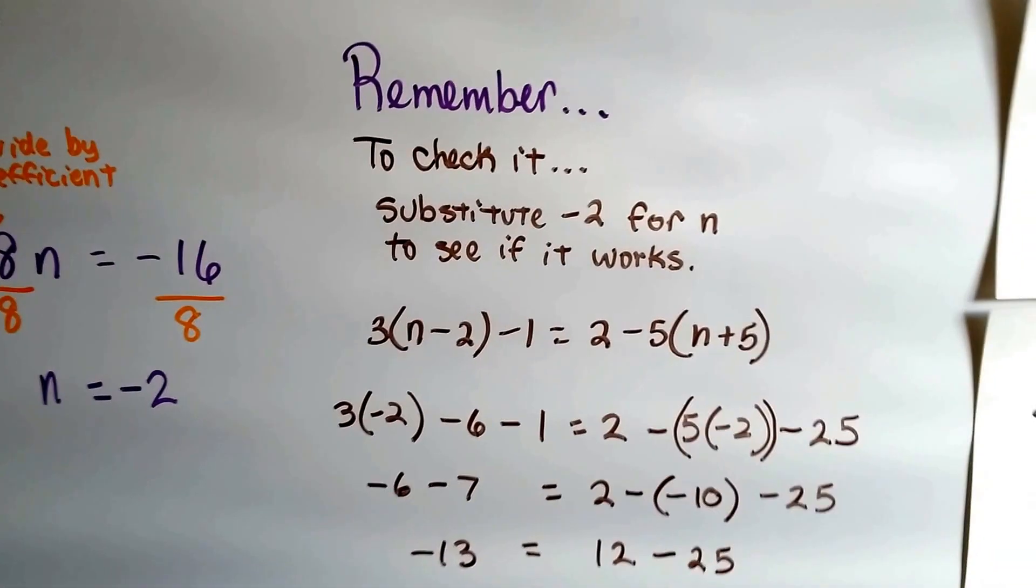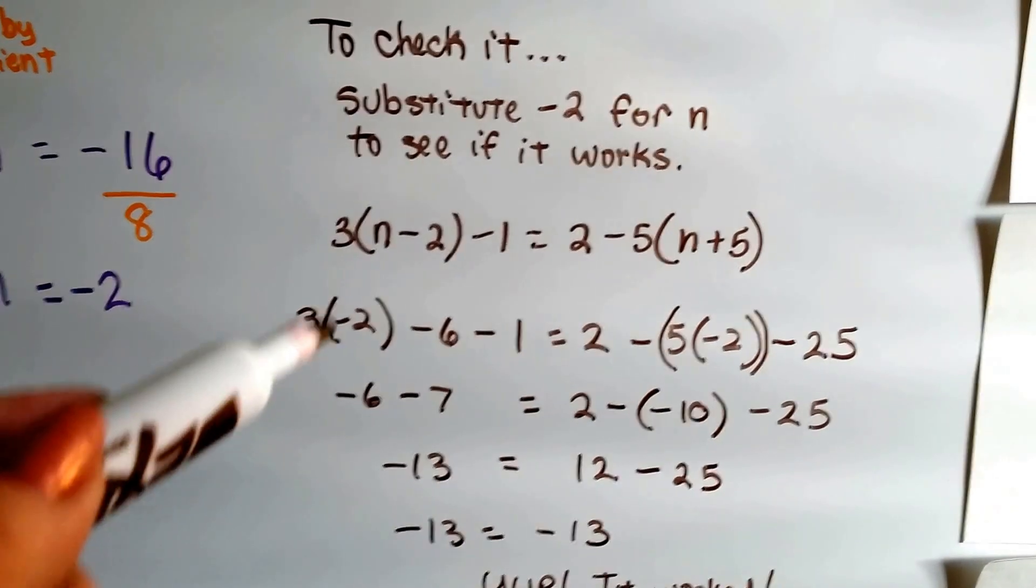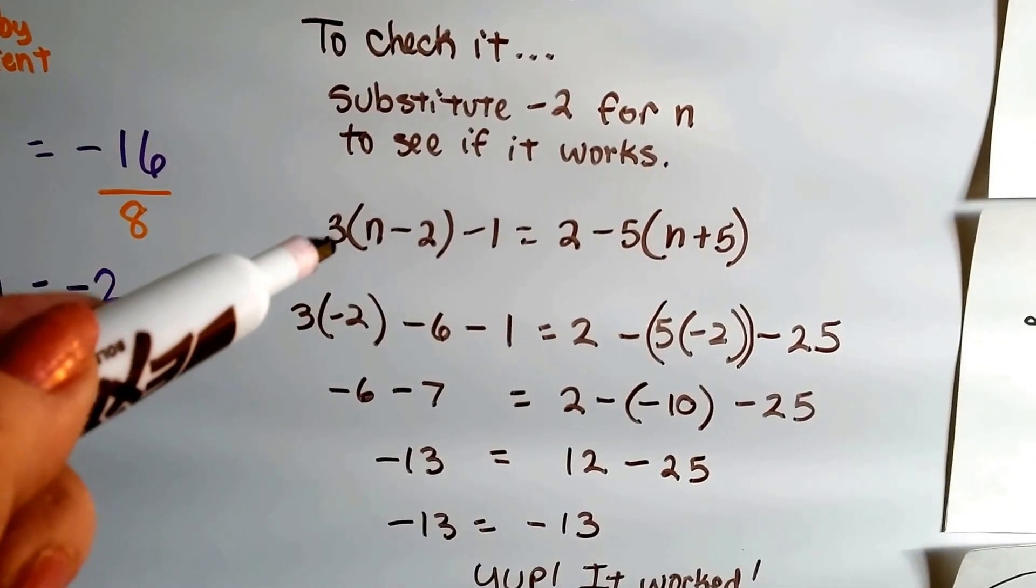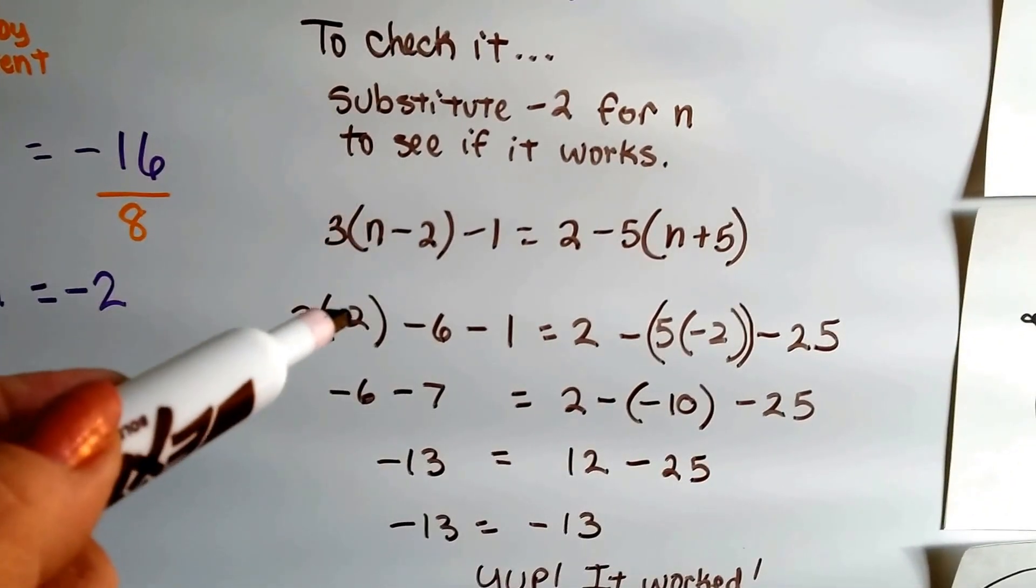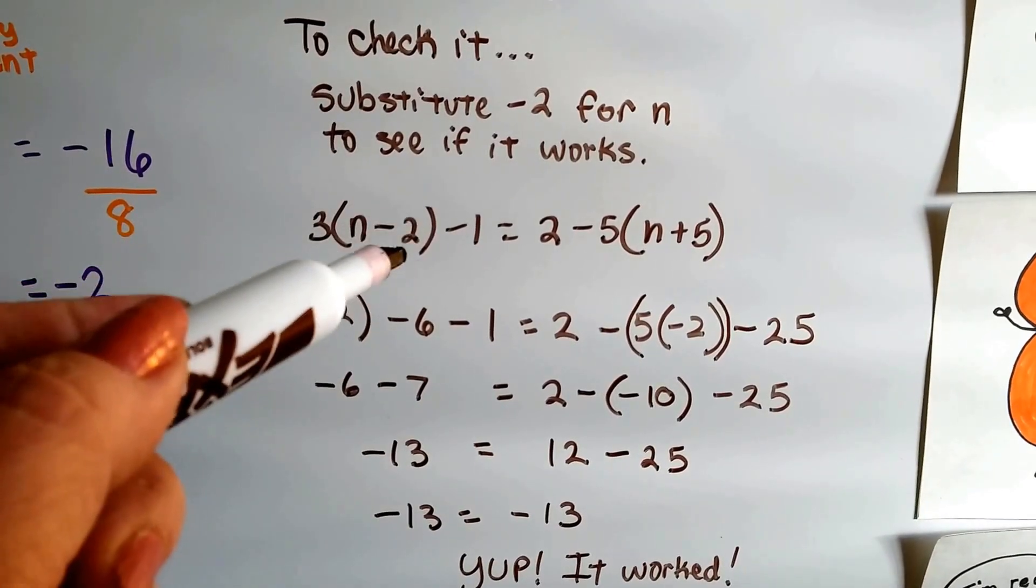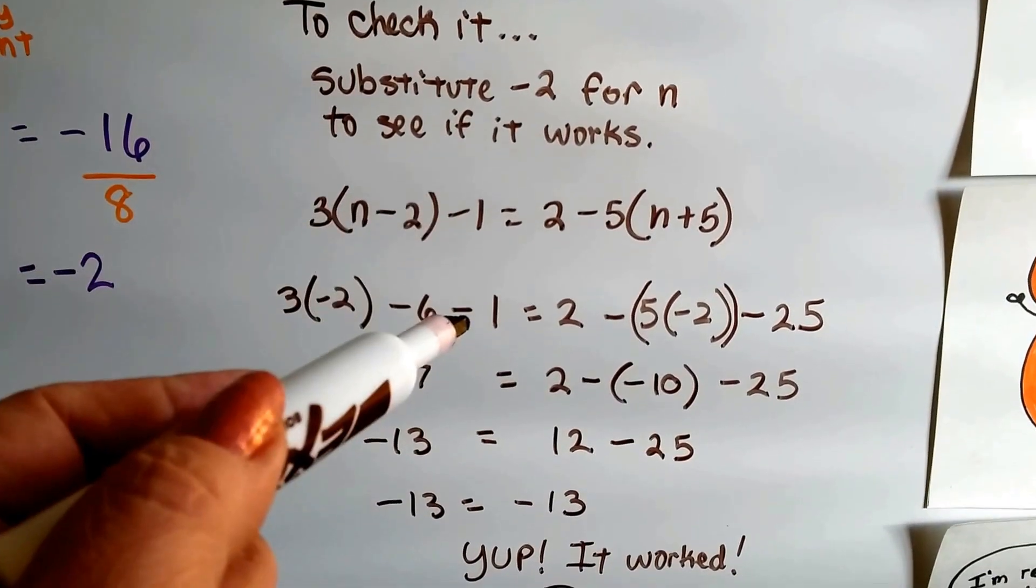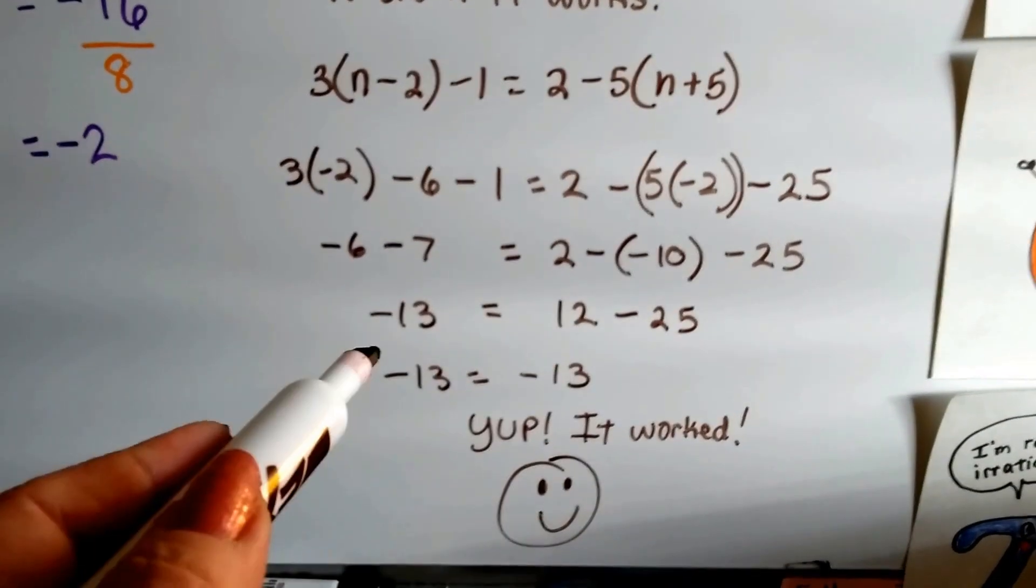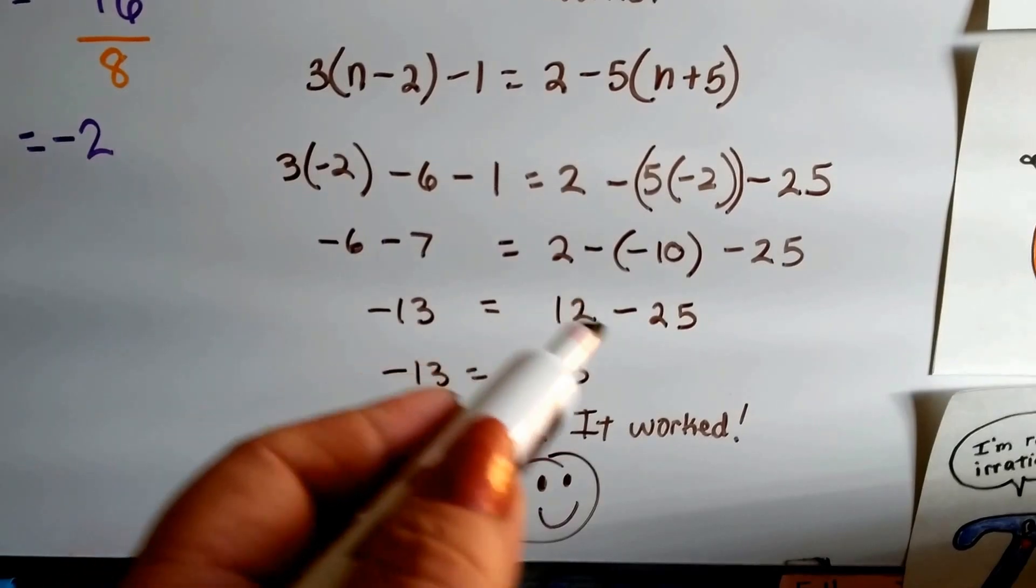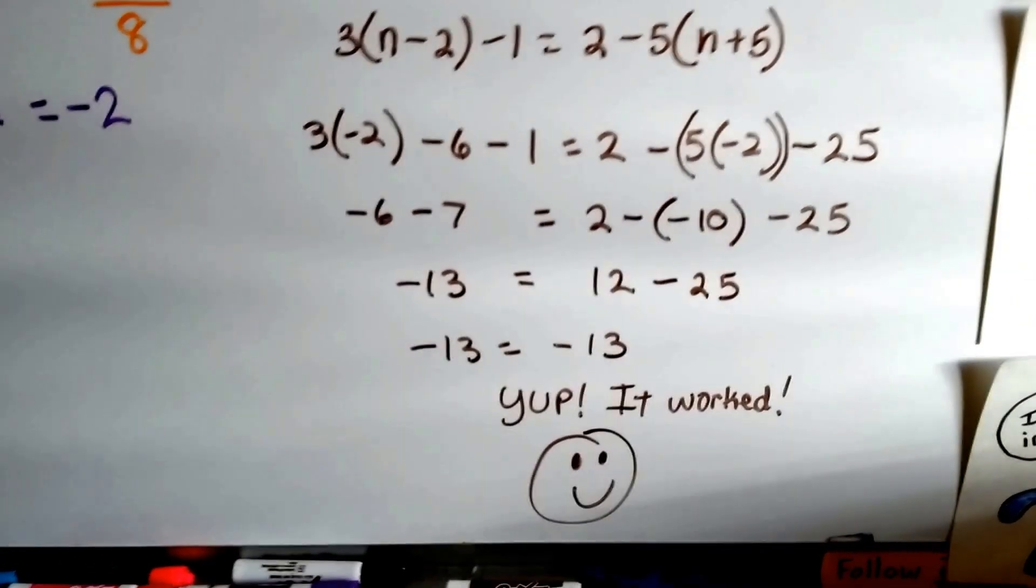We can check it by substituting the negative 2 for the n to see if it works. Everywhere that there was an n, we put a negative 2 there. So it said 3 times n, so that means 3 times negative 2, and minus 3 times the 2, we got the negative 6, and then we drop down our negative 1. And after doing all the math, we see negative 13 is equal to 12 minus 25, which is a negative 13, so it worked.